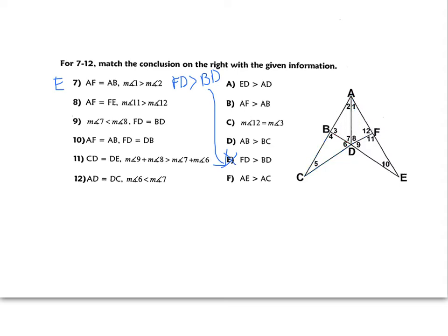For number eight: AF is congruent to FE, and angle 11 is bigger than angle 12. FD is congruent to itself, so the two triangles are DEF and AFD — I have two pairs of sides congruent. If angle 11 is bigger, the side across from 11 is bigger. So DE is going to be bigger than the side across from angle 12, which is AD. So A goes with eight.